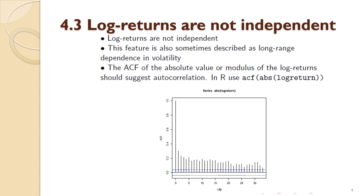If you look at the absolute values of the log returns, you do get quite significant autocorrelations. This is usually interpreted as meaning the log returns are approximately uncorrelated but are not independent — which can be a difficult distinction to make. This feature is sometimes described as long-range dependence in volatility.